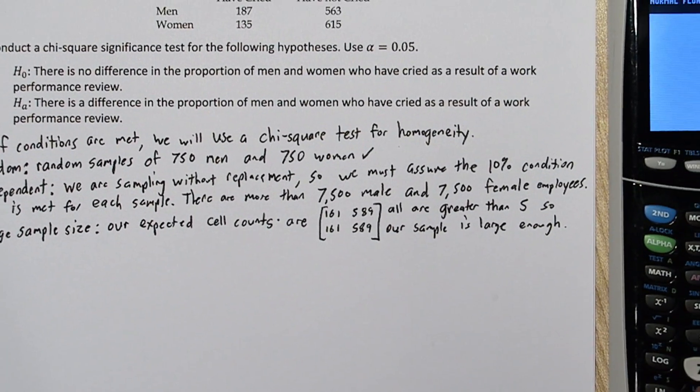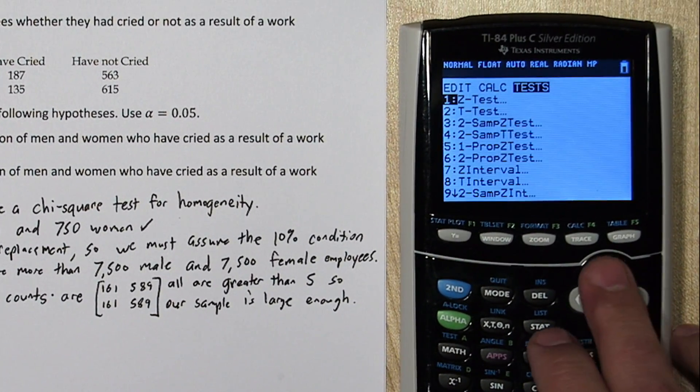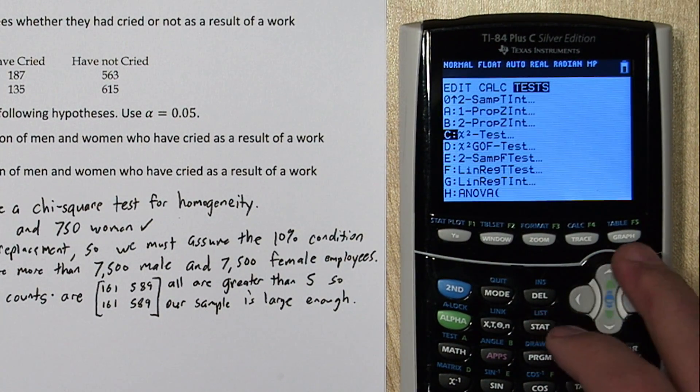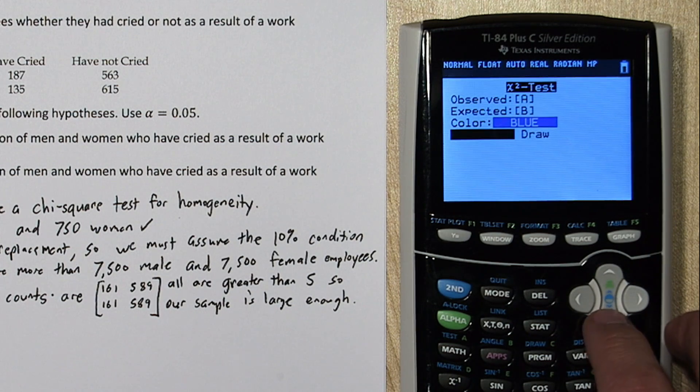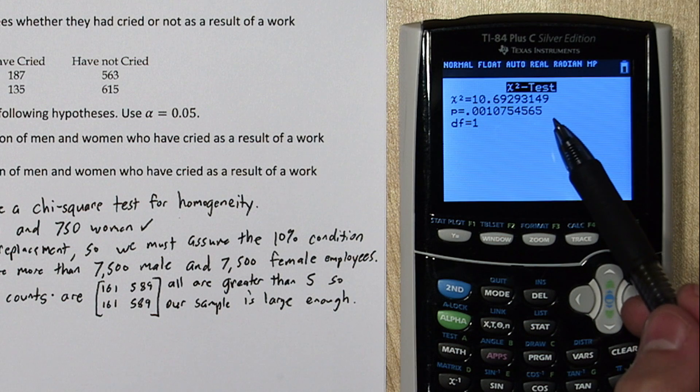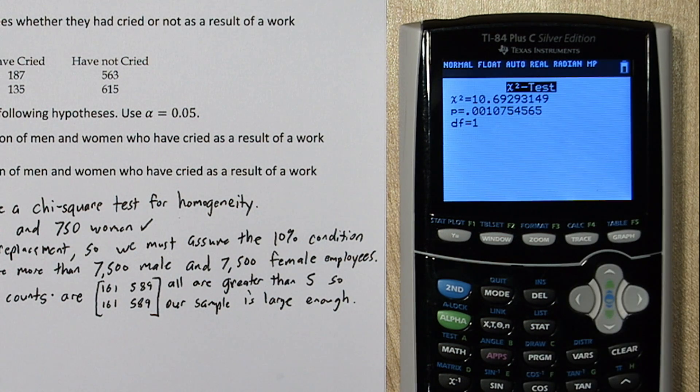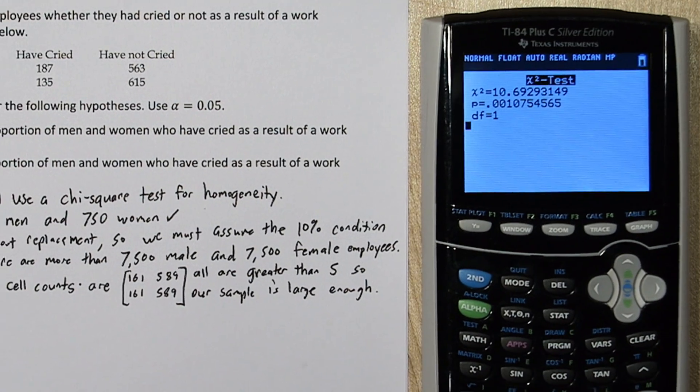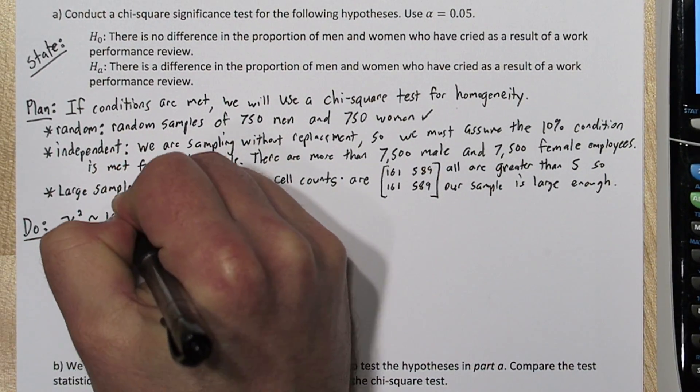For the do step, we're going to go back to the stat menu and go over to test. And we're going to go to chi-square test again. And this time we'll look at the data. So we see our test statistic is about 10.7. There's our p-value. It's pretty low. And our degrees freedom is 1. So let's write that down.